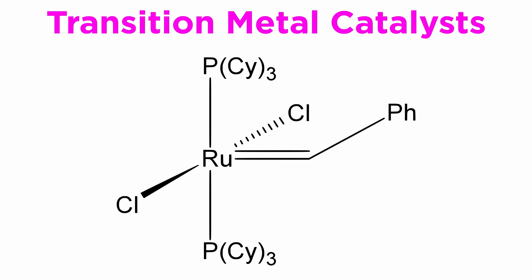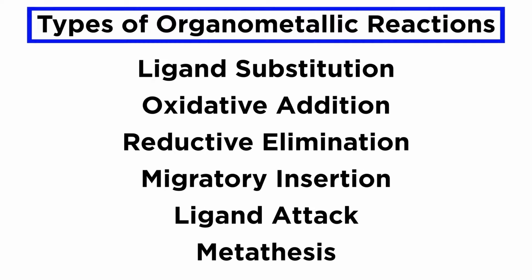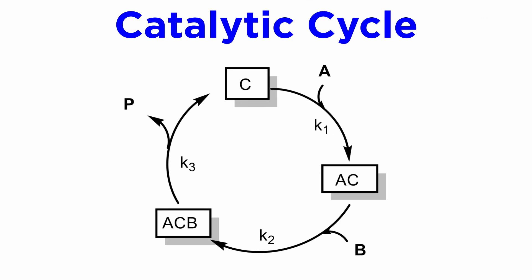How can we get transition metal complexes to enact this type of catalysis? Again, we have already seen many of the basic reactions transition metals can do. What we are going to do now is learn how to put a bunch of them all in a row to create something called a catalytic cycle. This is much more complex than mixing two compounds and heating.